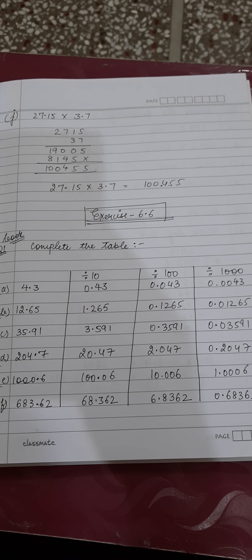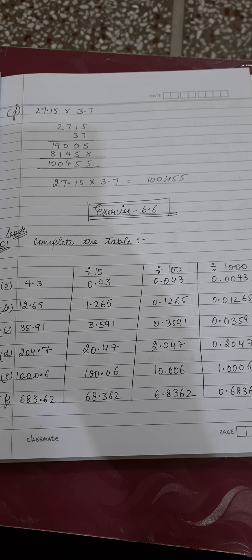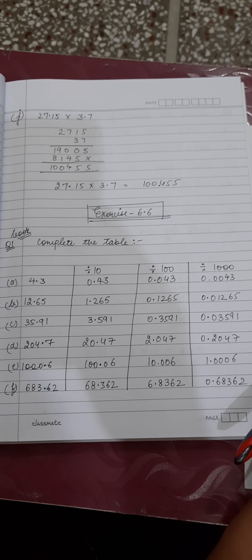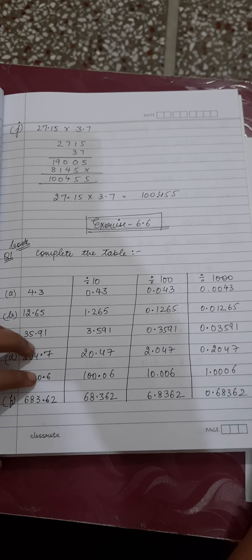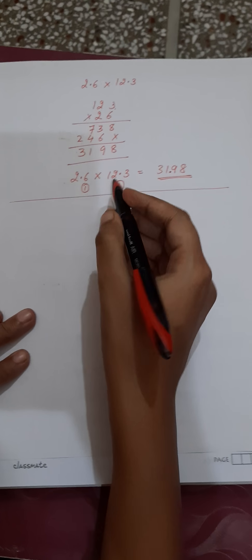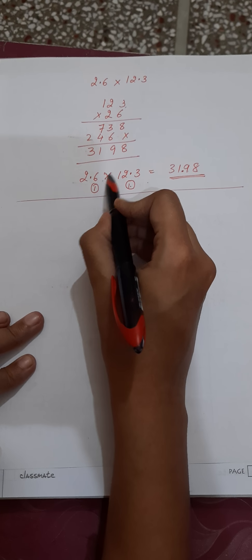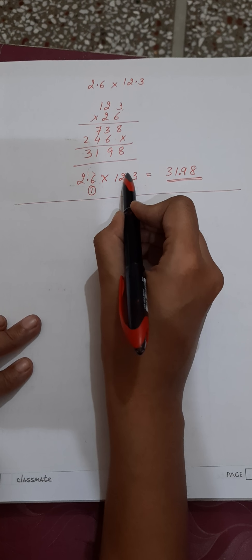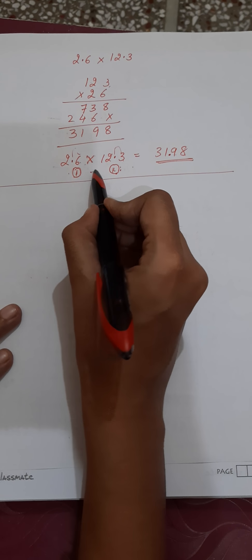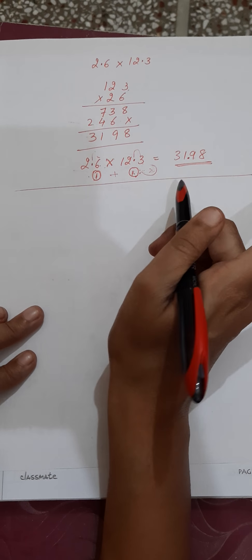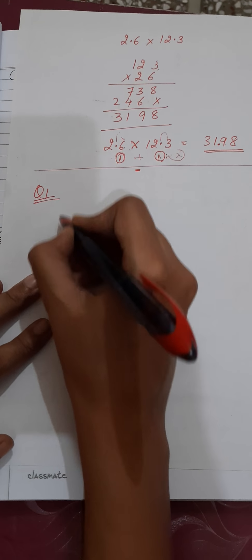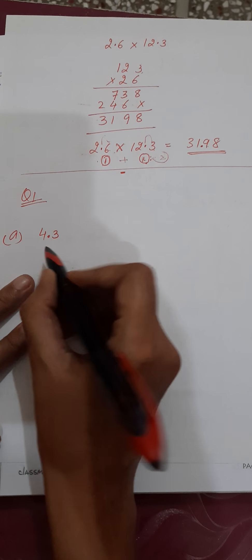Hello everyone. In Exercise 6.6 we will be doing the division of decimals. This table is given in the book and you have to do the first question in the book. Now in multiplication we used to add the number of digits after the decimal, but in division we are going to subtract it. Everything else will remain the same.